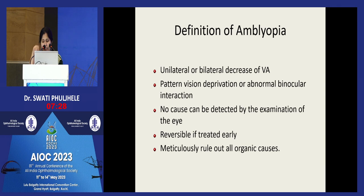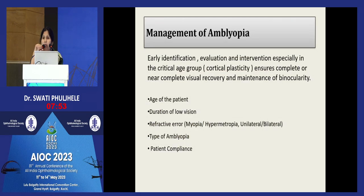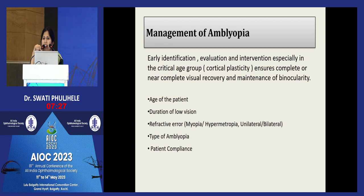Amblyopia can be classified as strabismic amblyopia — more common with esotropias than exotropia; ametropic amblyopia from bilateral high refractive error; anisometropic amblyopia from a difference in refractive error between the two eyes; and visual deprivation amblyopia from understimulation of the retina, such as in congenital ptosis, congenital cataracts, or corneal opacities. Timely intervention is critical due to cortical plasticity, which exists only during the critical age. Anisometropic amblyopia tends to do better than strabismic or sensory deprivation types. Patient compliance is the most important factor.